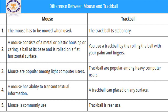A mouse has the ability to transmit textual information — you can select text-based data as well as icons or symbols with a mouse. Regarding surface placement, a trackball can be placed on any surface, while certain types of mouse are restricted — mechanical mice need a mouse pad, optical mice cannot be placed on glossy surfaces, and only laser mice can be placed on any type of surface.